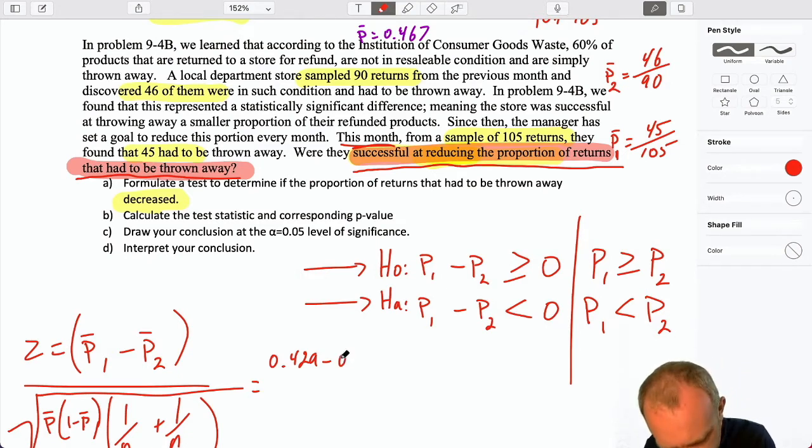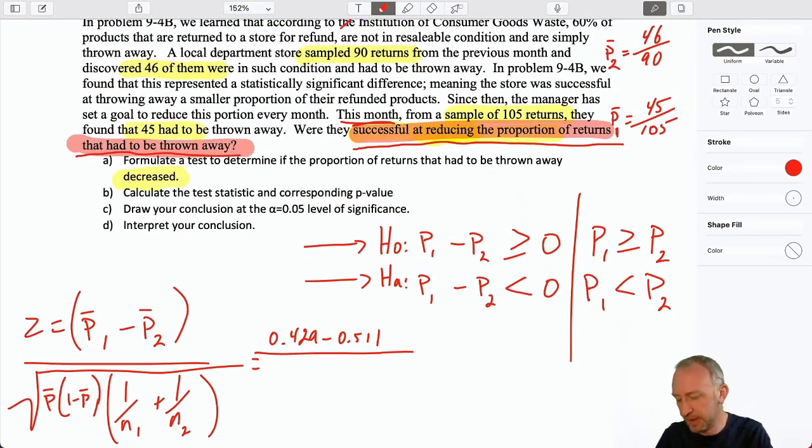Now, that standard error, again, I'm using this pooled estimator, 0.467, so that's 0.467, times 1 minus 0.467, times 1 over 90, and 1 over 105, square root all of that, and I have a standard error of 0.072.